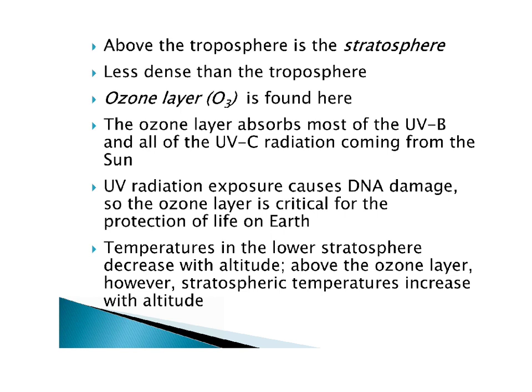Temperatures in the lower stratosphere decrease with altitude. So below the ozone layer, that temperature decrease as we go further up continues. But once you hit the ozone layer, above it, stratospheric temperatures increase with altitude — and that has to do with incoming solar radiation. Below the ozone layer, the UV radiation is largely blocked, so the temperature is cooler. Above, you don't have that same blocking of UV radiation, so the temperature is higher.